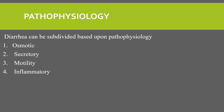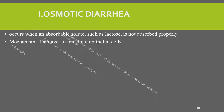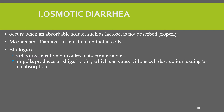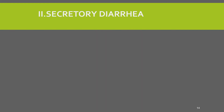When we see osmotic diarrhea, this occurs when an absorbable solute such as lactose is not absorbed properly, and the mechanism is due to damage to intestinal epithelial cells. Etiologies include rotavirus, which selectively invades mature enterocytes, and Shigella, which produces Shiga toxin that can cause villous cell destruction leading to malabsorption. This results in increased solute in the gut lumen, causing fluid retention in the intestinal lumen and diarrhea.